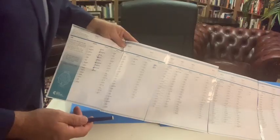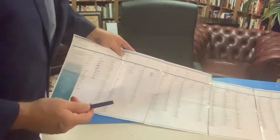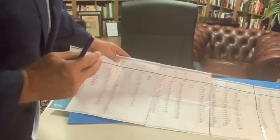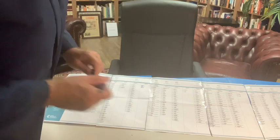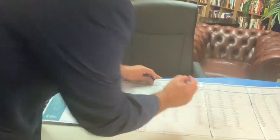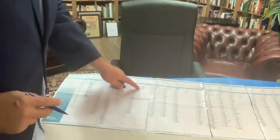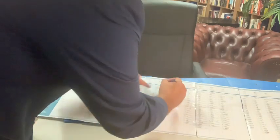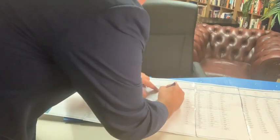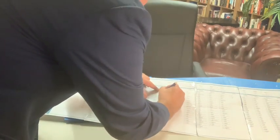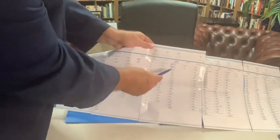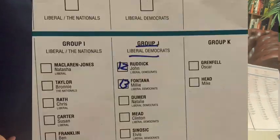We're recommending 12 and 13 for the first two people in Group J, which is the Liberal Democrats. So if you come across here to Group J — Liberal Democrats — give number 12 to John Ruddick and number 13 to Millie Fontana. You can see there 12 and 13 for Group J.